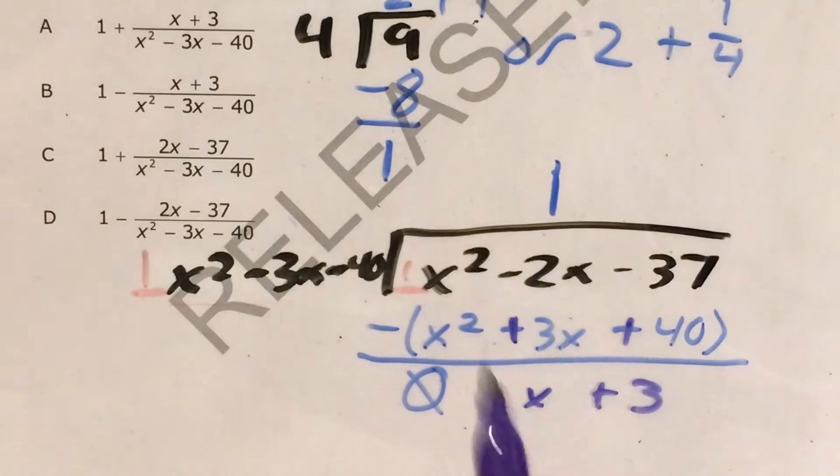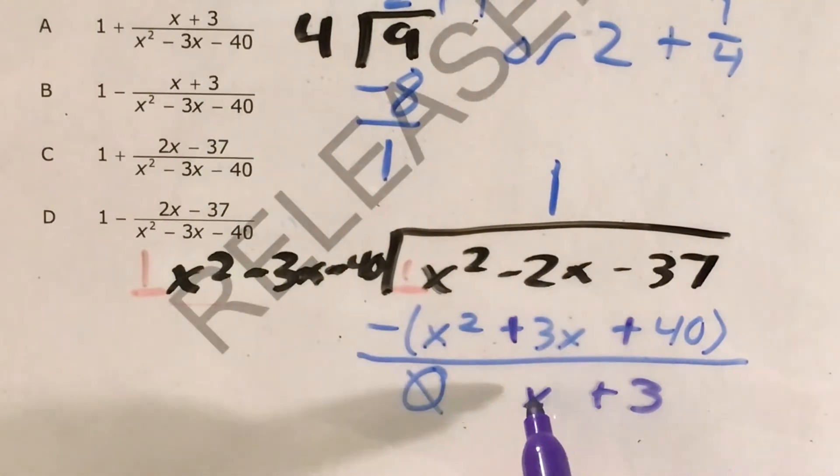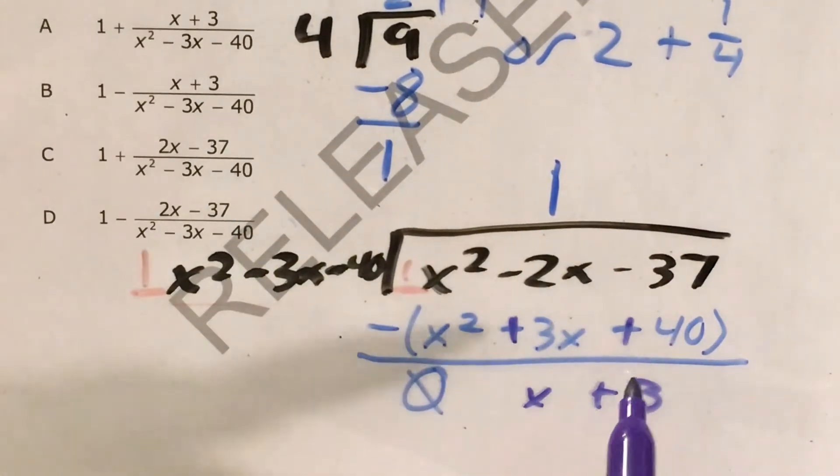Whoops, I just realized you couldn't see that. Negative two x plus three x is one x. Negative 37 plus 40 is three.